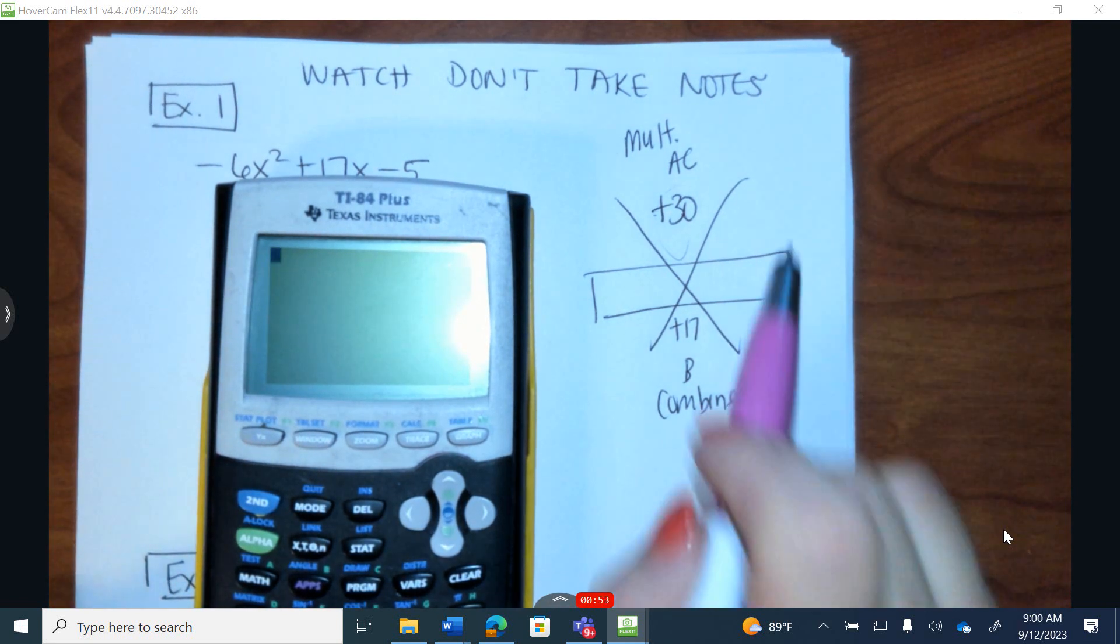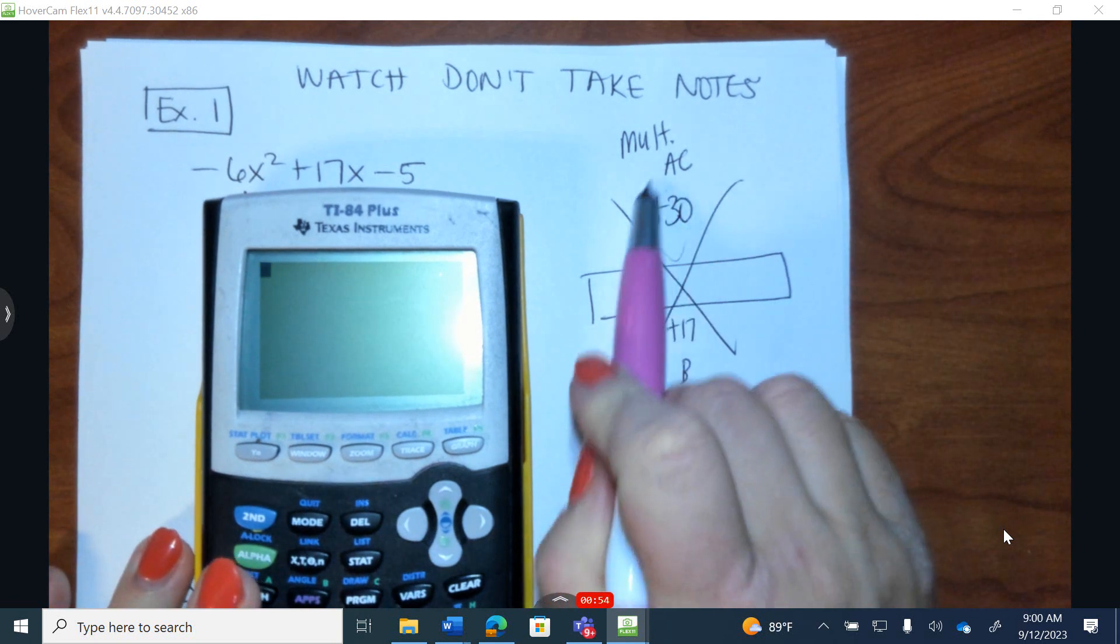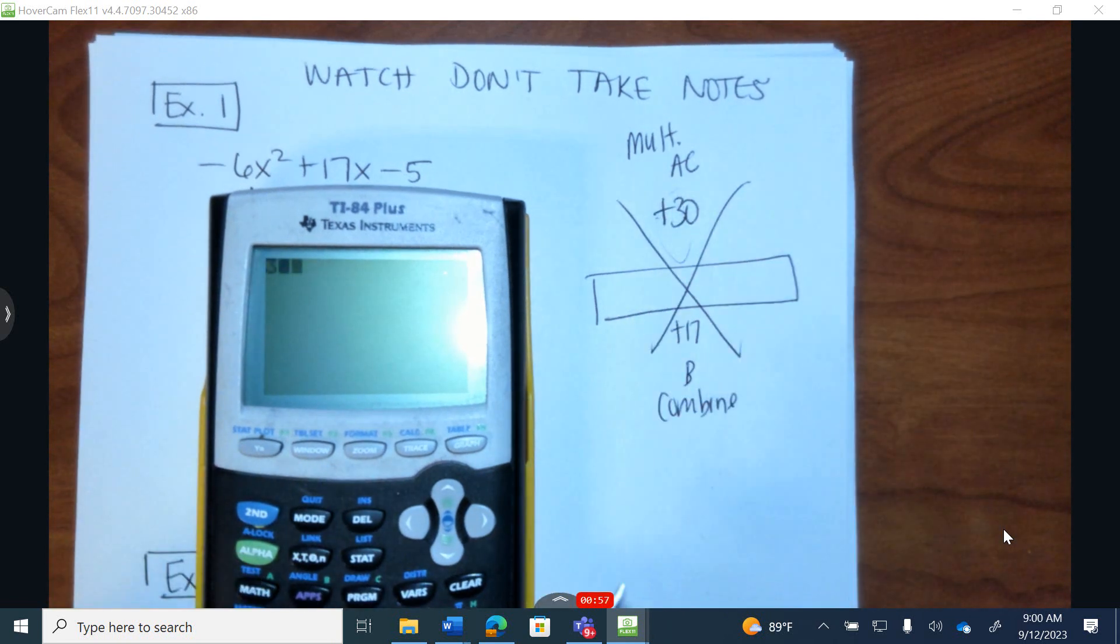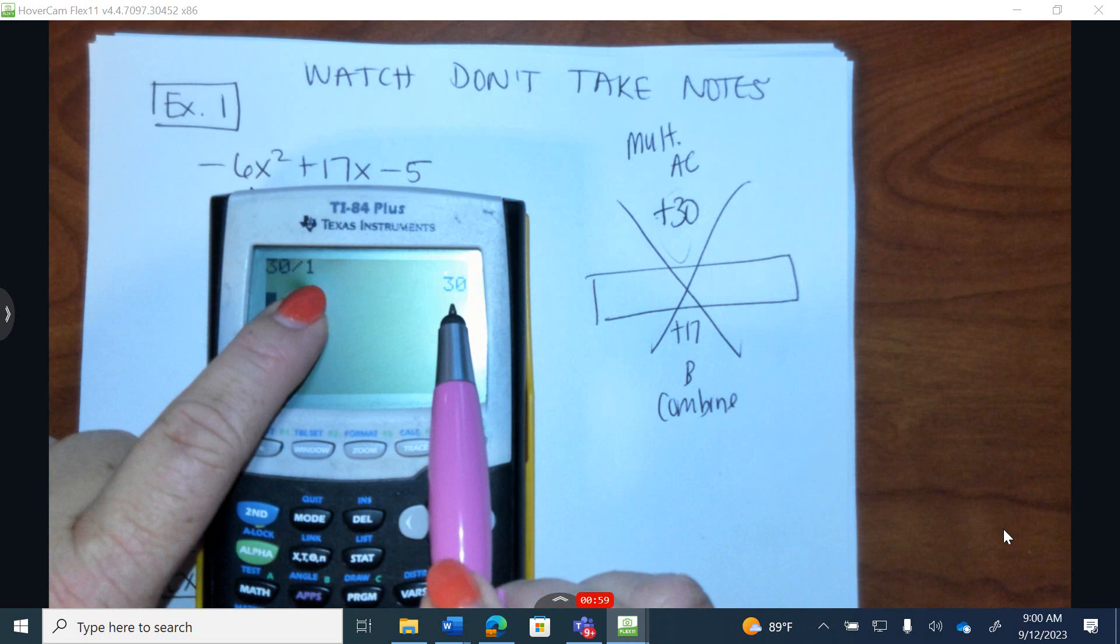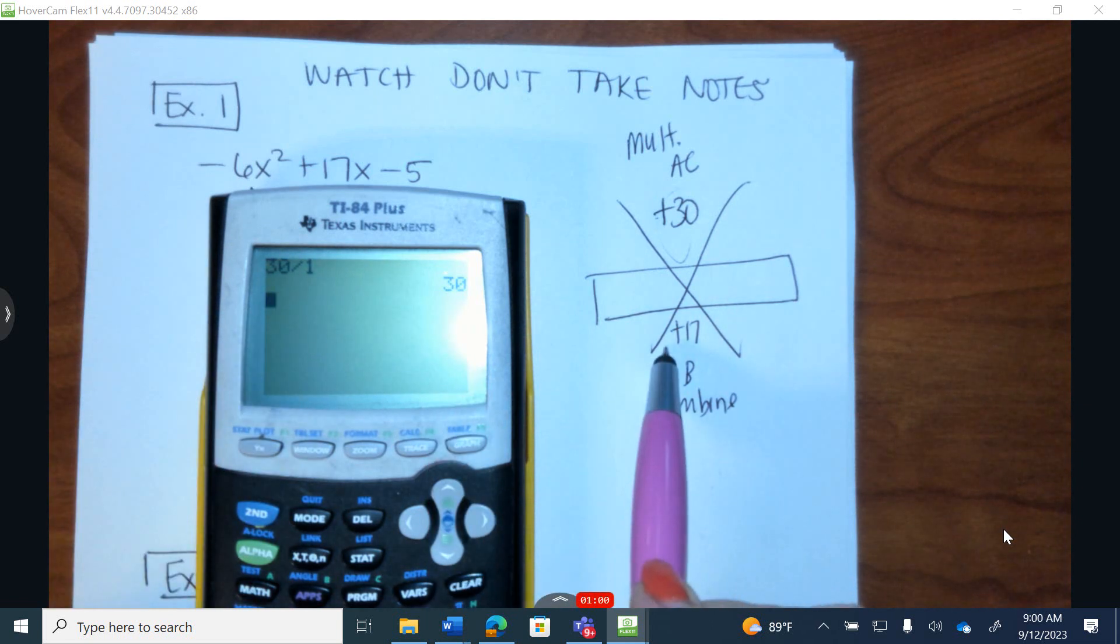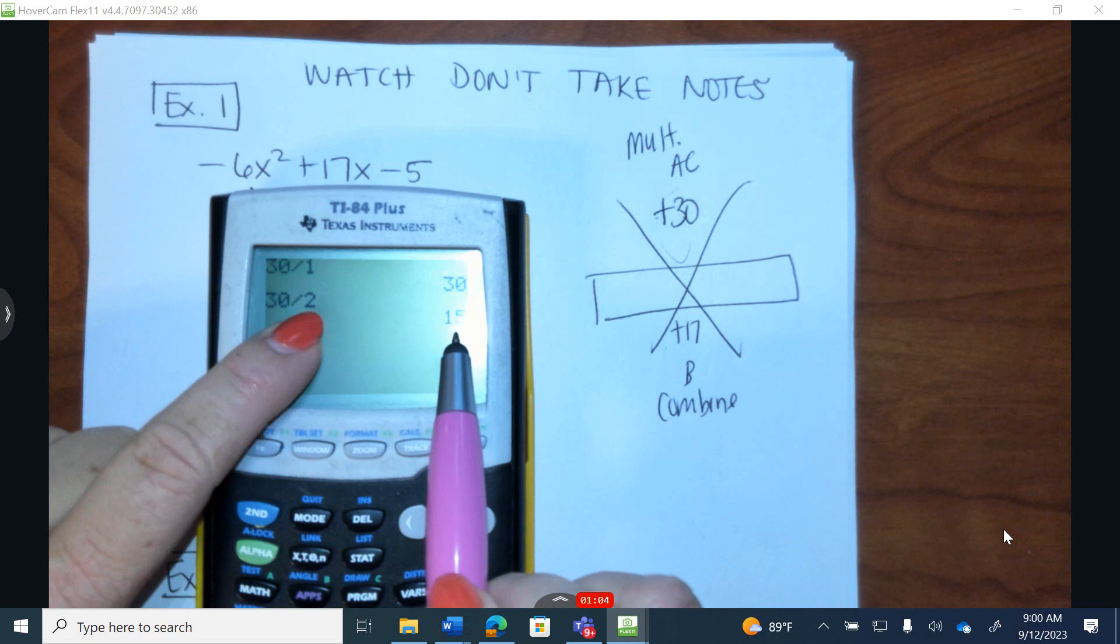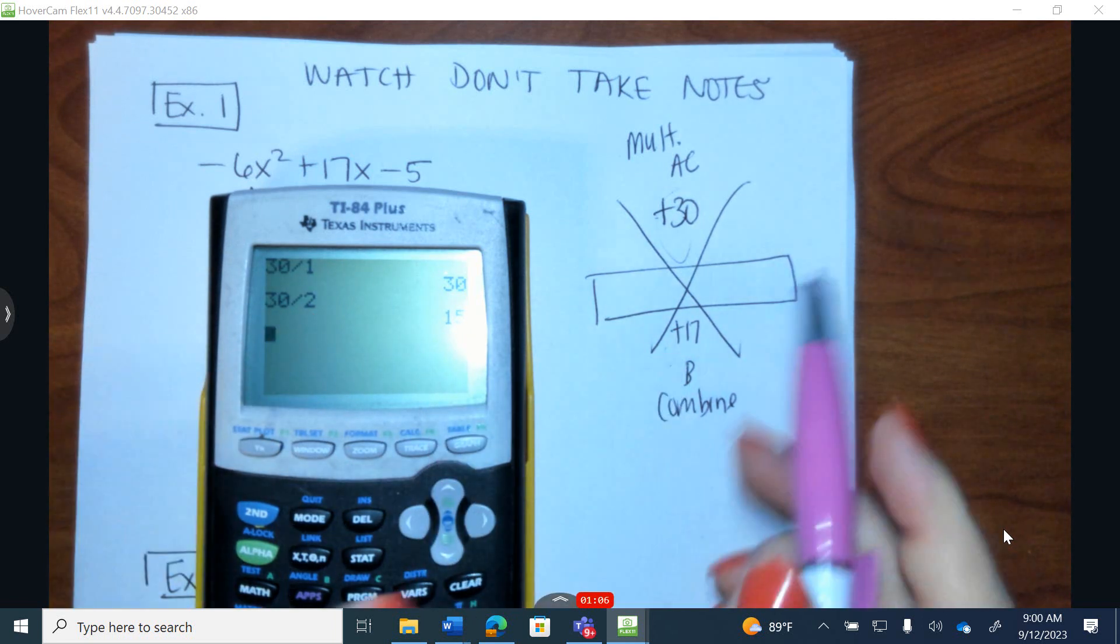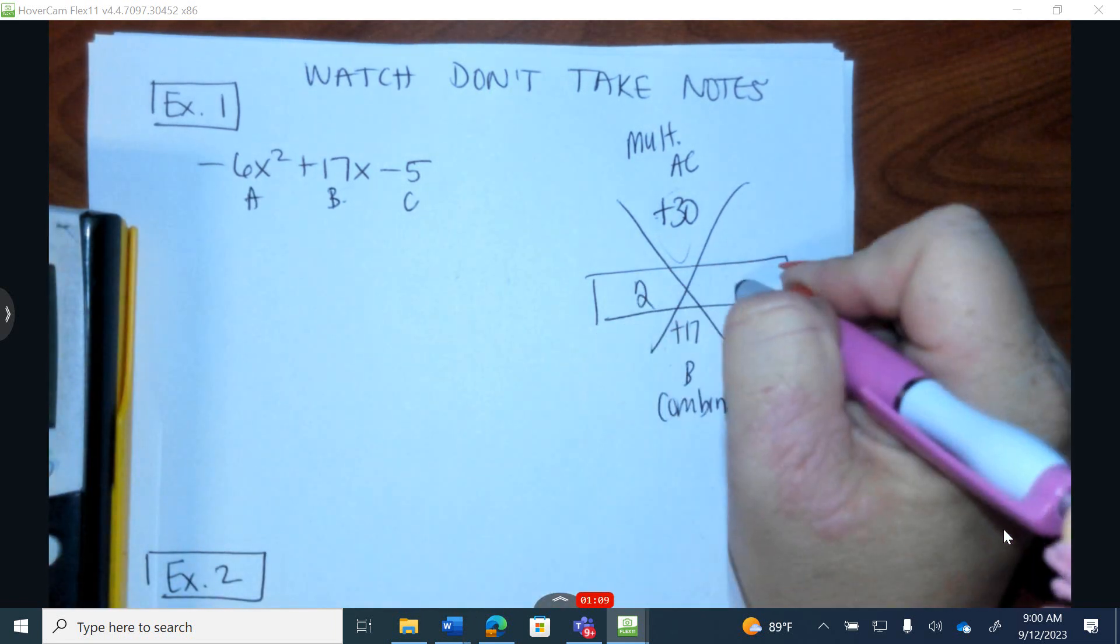So how can we come up with those combinations? We're starting with 30. This is where I begin, the top number. I divide 30 by 1. Does 1 and 30 somehow give you a 17? Nope, doesn't work. I divide 30 by 2. Does 2 and 15 somehow give you 17? It does. I'm going to write down a 2 and a 15.